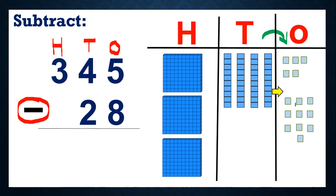So when we borrow one ten, we will have ten ones. Ten ones plus we have five more — so that makes fifteen ones total. So now from fifteen we can remove eight, right? Yes, we can remove. Now here we don't have that one ten because we borrowed it. Because we could not remove eight from five, we borrowed one ten from tens place, and got fifteen ones. From fifteen we can remove eight. Now because we borrowed one ten, before we had four tens, but now we will have only three tens.